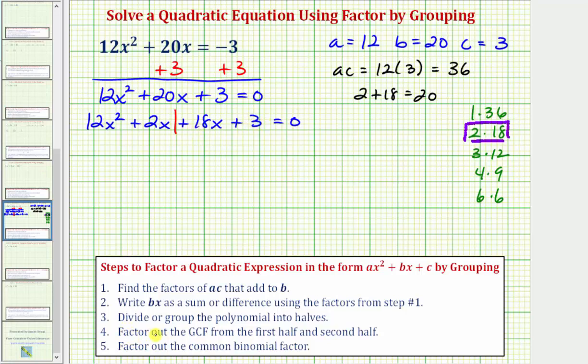Step four, we want to factor out the greatest common factor from the first half and second half. So looking at just the first two terms, we want to factor out the greatest common factor, which would be 2x. So we'll factor out 2x from just the first two terms, that'll leave us with 6x plus one. And now we want to factor the greatest common factor out of the second two terms or the second group. The greatest common factor of 18x plus three would be three. So we'll factor out a positive three, so we'll write plus and then three. If we factor out three, we're left with 6x plus one. And this is still equal to zero.